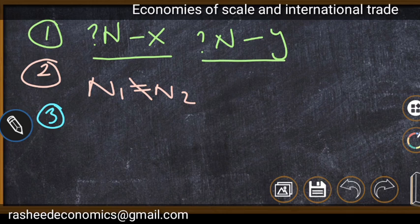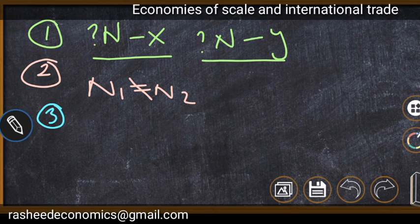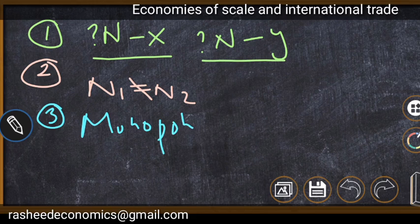Another important point is that if economies of scale persist for a long period, it may lead to monopoly or oligopoly. In the case of monopoly, a single producer produces the entire quantity of a homogeneous product. If economies of scale persist over a large continuous range of output, there is a chance of the emergence of monopoly or oligopoly.